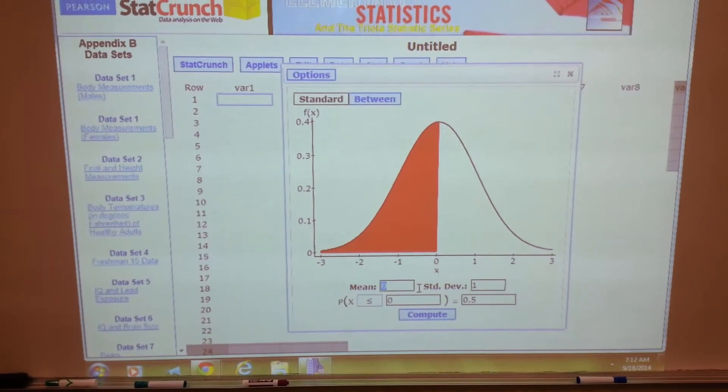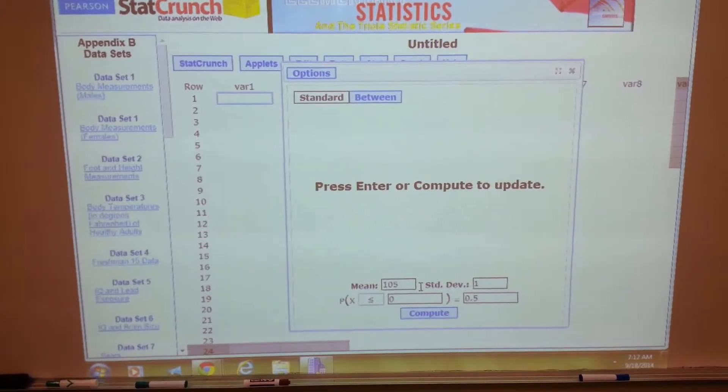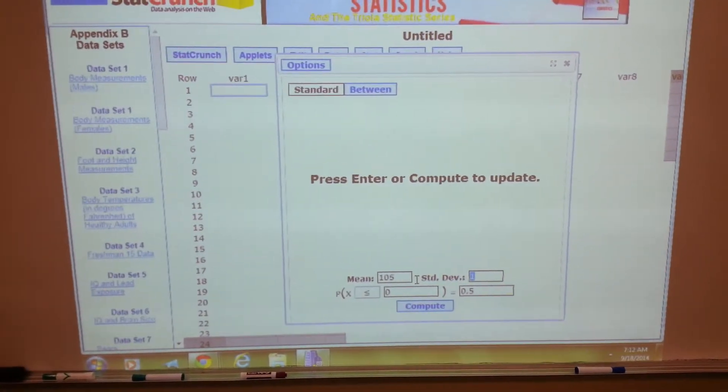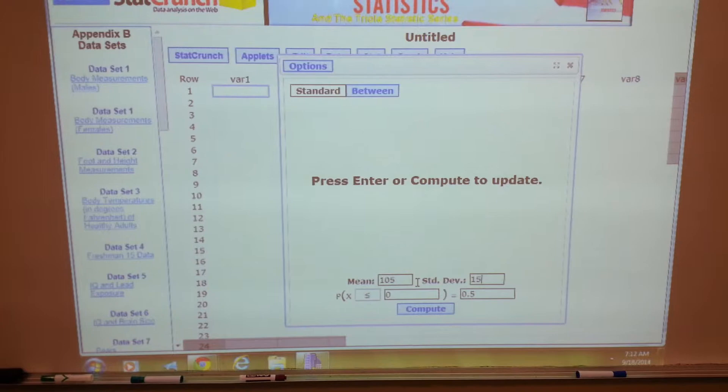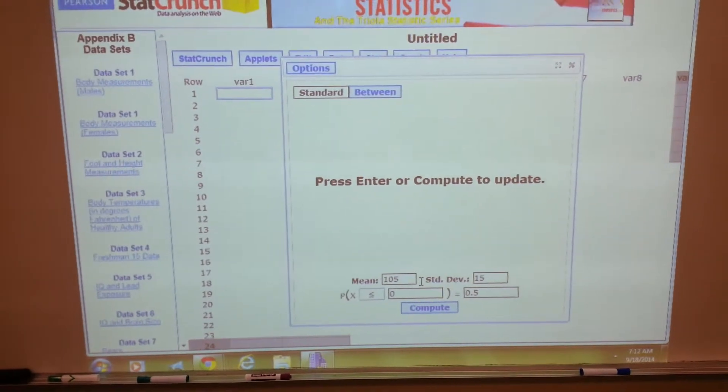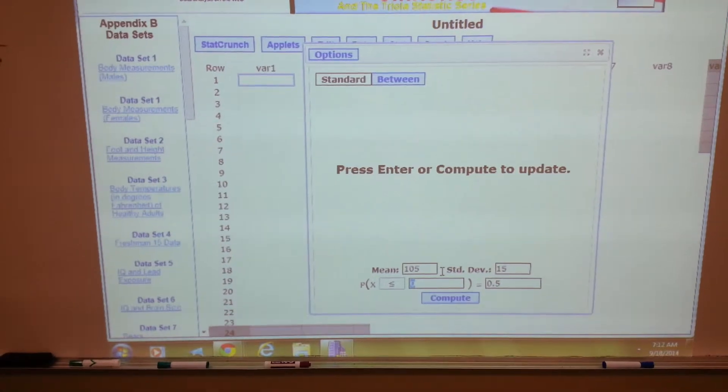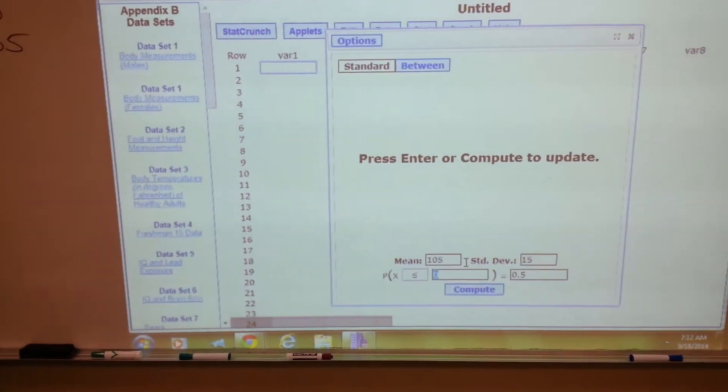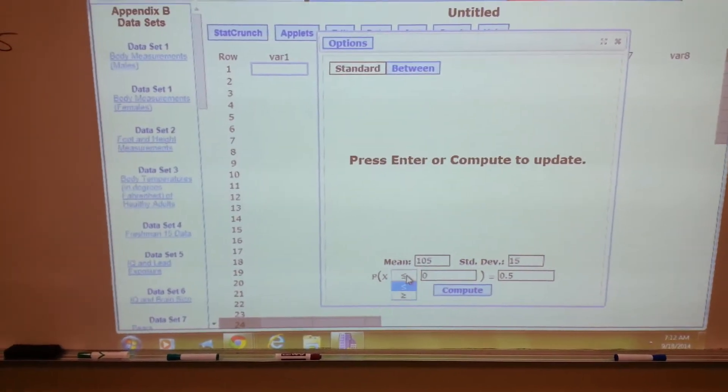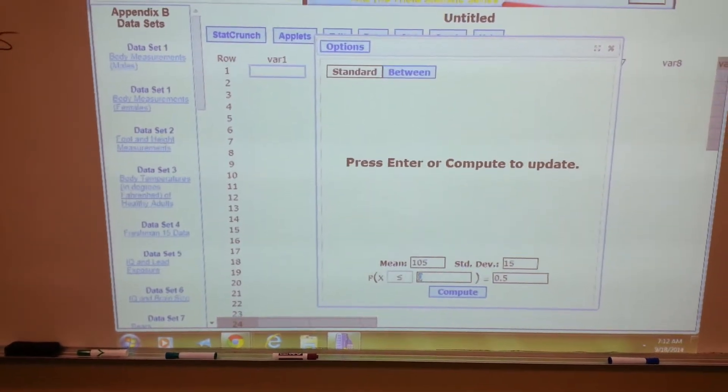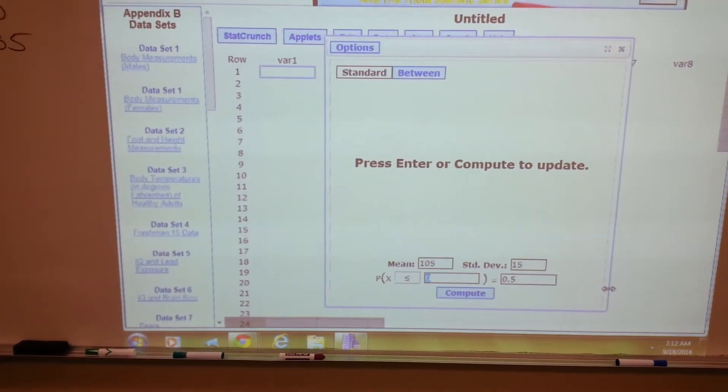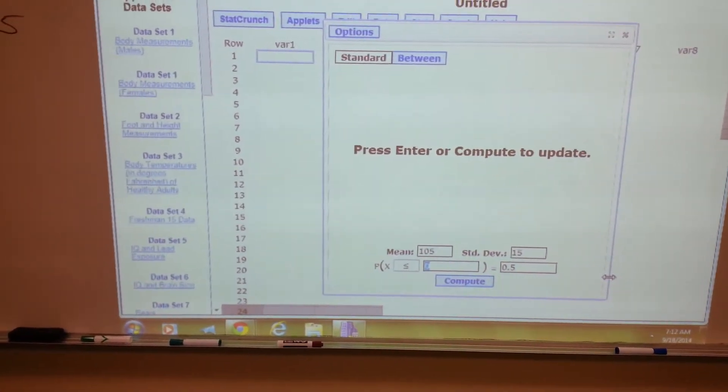Okay, the mean is 105, standard deviation 15. The probability that x is less than or equal to—if we need it greater than, you can change it. Now remember, less than or equal is the same as less than here, 135.